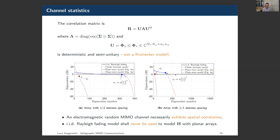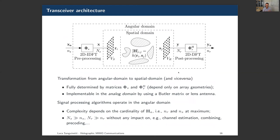The conclusion is that you should never use the independent and identically distributed model if you use planar arrays — it may be acceptable for linear arrays, but not for planar arrays. Since we have this representation from the spatial domain to the angular domain, the transceiver architecture to achieve the performance of the system first transforms to the angular domain using DFT processing, and then designs signal processing algorithms for channel estimation, combining, and precoding in the angular domain. The beauty of this model is that in the angular domain, everything is a function of the dimension provided by electromagnetic propagation conditions — it doesn't matter how many antennas you have, you exploit the degrees of freedom of the electromagnetic propagation.